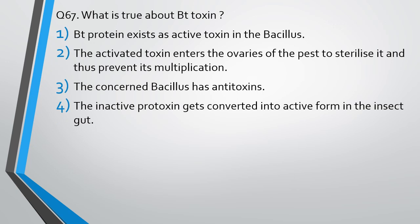Question number 67. What is true about BT toxin? BT proteins exist as active toxin in Bacillus. The activated toxin enters the ovaries of the pest to sterilize it, preventing its multiplication. The concerned Bacillus has antitoxins. Or, the inactive protoxin gets converted to active form in the gut intestine. You have to find the correct statement about BT toxin.